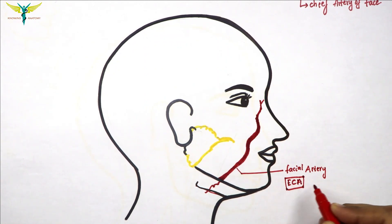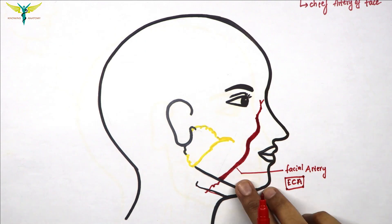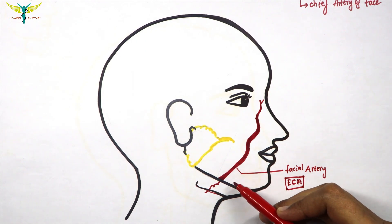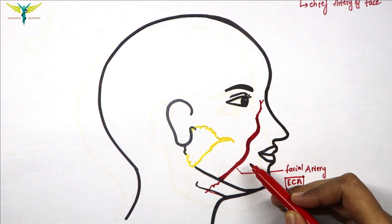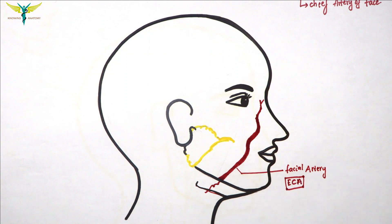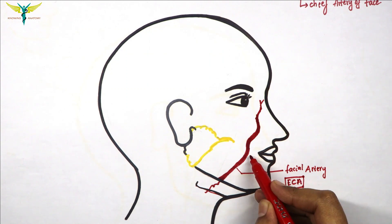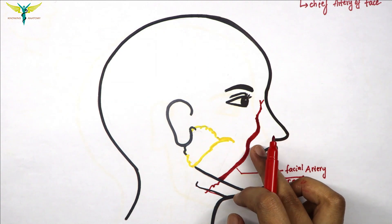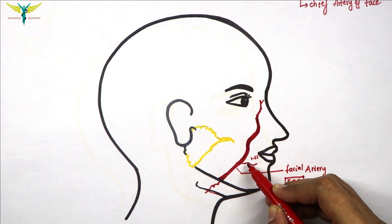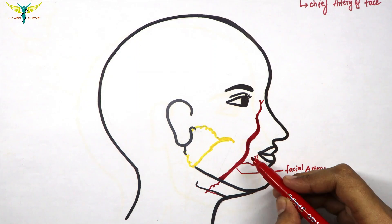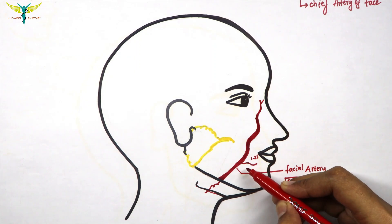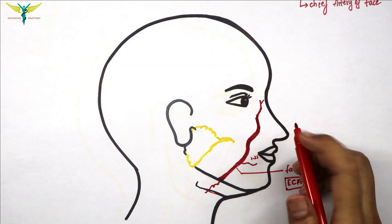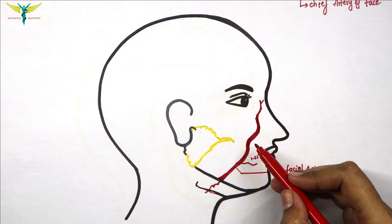The artery passes tortuously in the upward and forward direction. At a point at least 1.25 centimeters lateral to the angle of the mouth, it gives a branch called the inferior labial artery, and then it passes above along to the side of the nose.